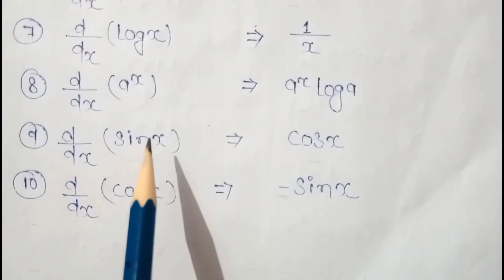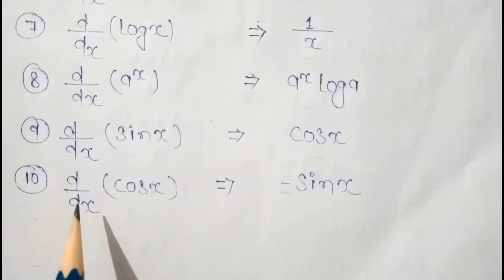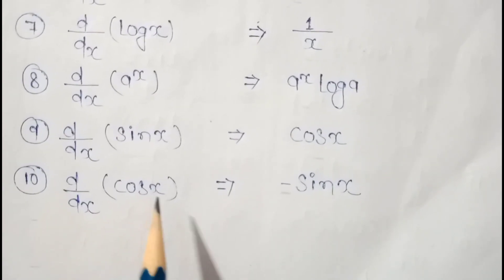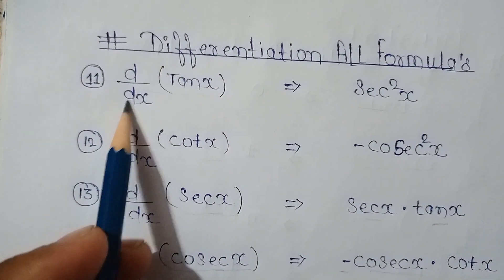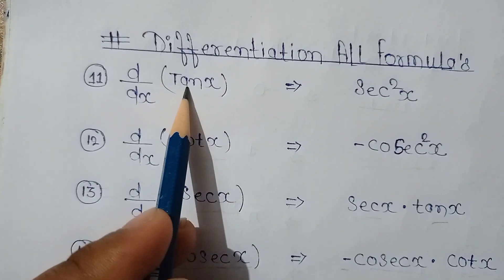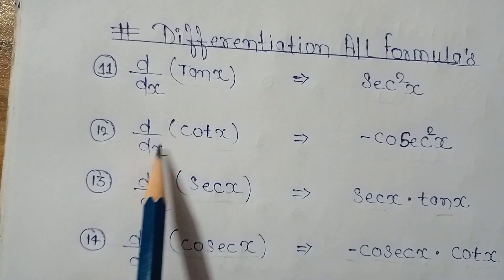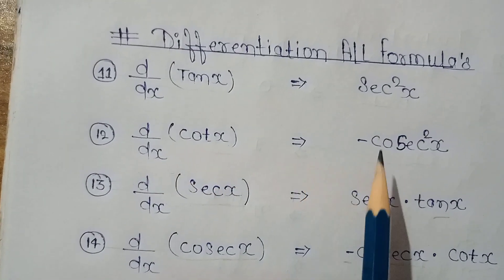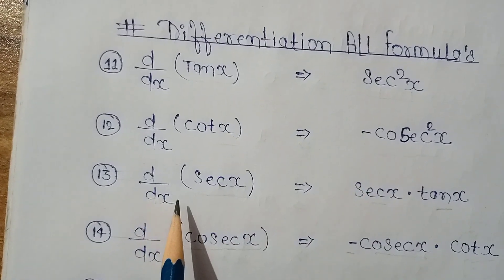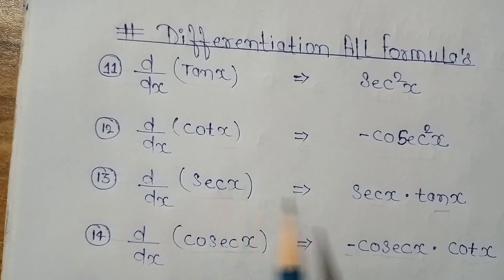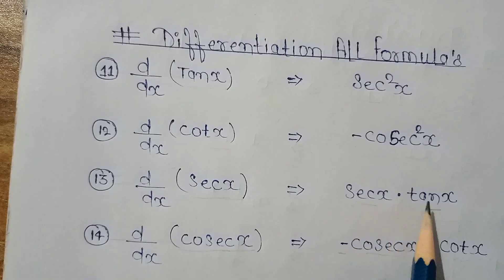d by dx of sin x is equal to cos x. d by dx of cos x is equal to minus sin x. d by dx of tan x is equal to sec square x. d by dx of cot x is equal to minus cosec square x. d by dx of sec x is equal to sec x into tan x.